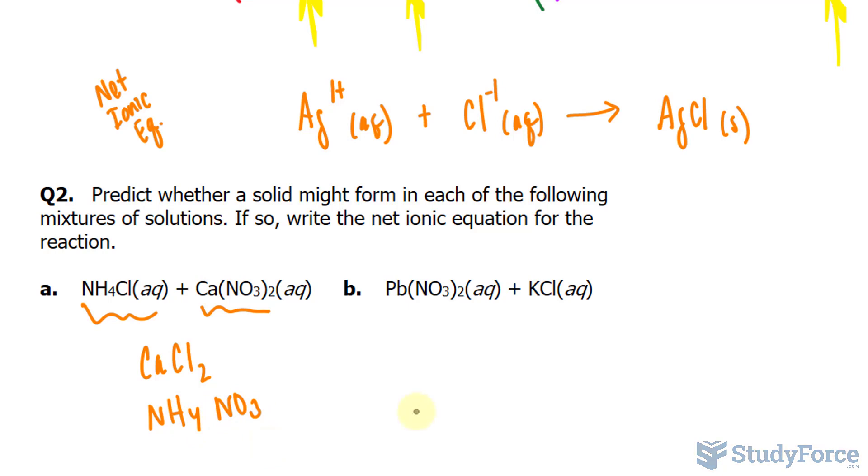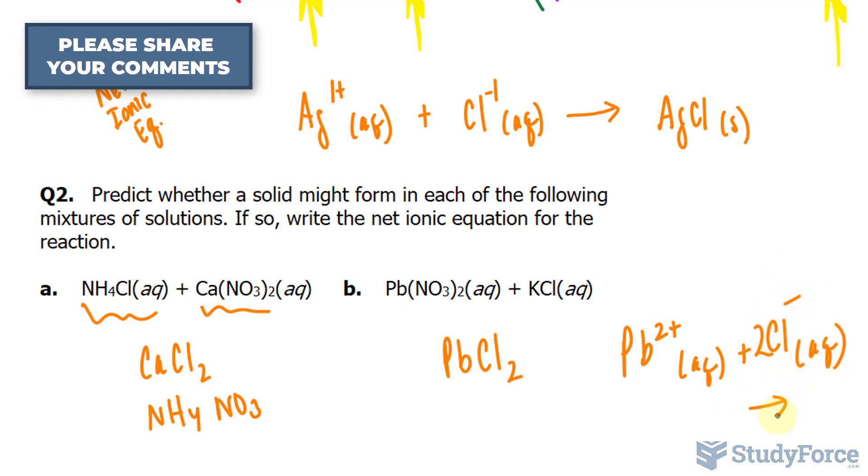For part B, we have lead nitrate and potassium chloride. A solid does form here, and it forms with lead and chlorine, forming PbCl2. The net ionic equation is Pb2+ aqueous plus chlorine—make sure it's balanced, so I'll place a two there—aqueous, and that forms lead chloride.